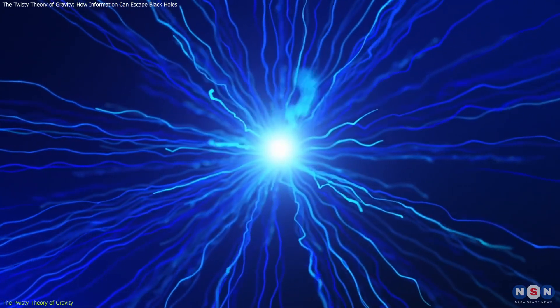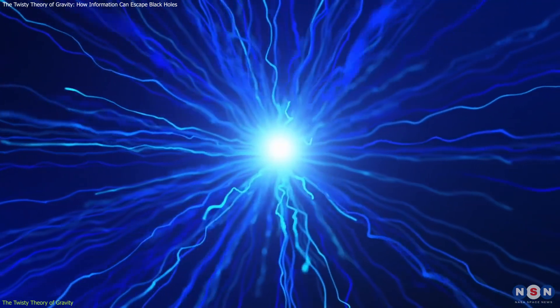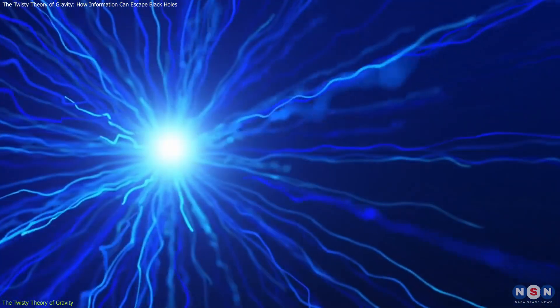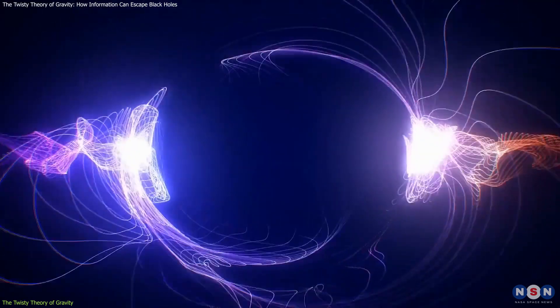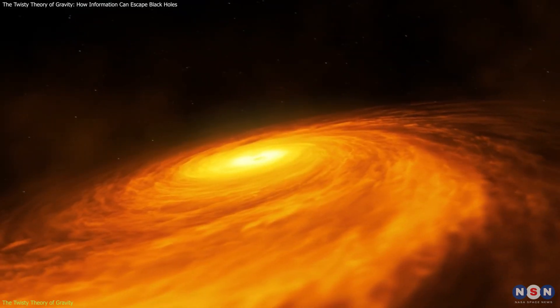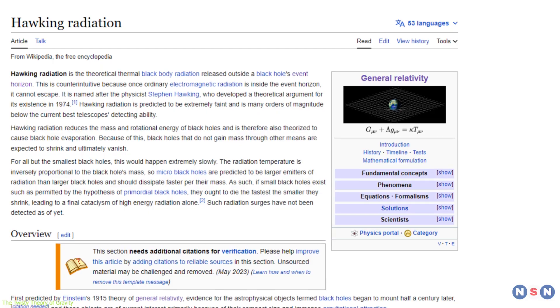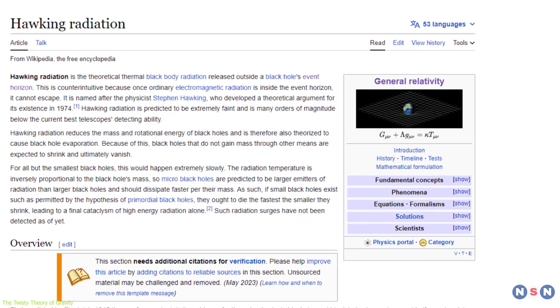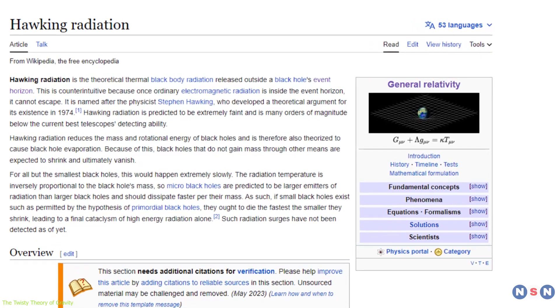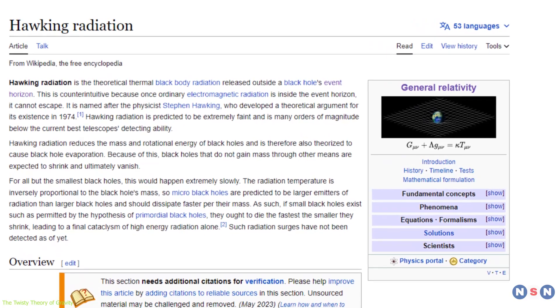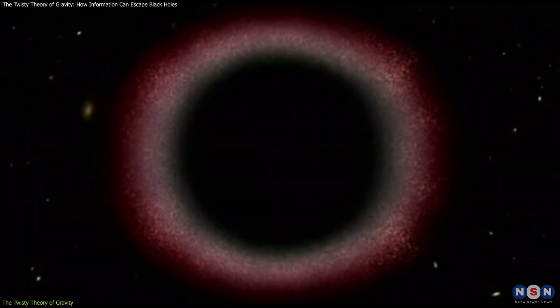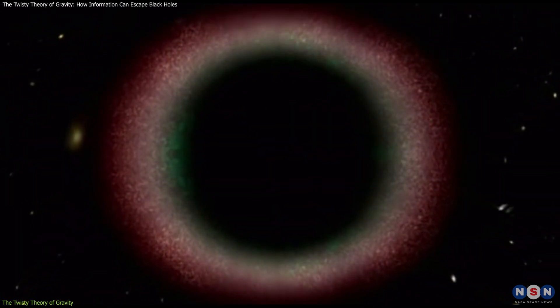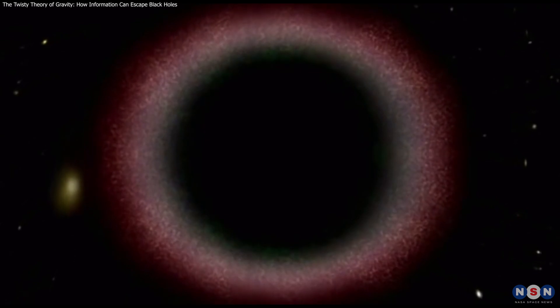The theory suggests that quantum teleportation can occur between the qubits on the black hole surface and the qubits outside the black hole, using twisters as the entangled resource and Hawking radiation as the classical communication channel. Hawking radiation is the thermal radiation that black holes emit due to quantum effects near the event horizon. It also suggests that Hawking radiation is not random or thermal, but rather carries information about the quantum state of the black hole through twisters.